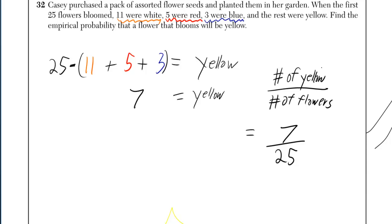So we need to find out how many yellow we have. Well, if there's 25 flowers, we need to subtract the sum of the 11 white flowers, the 5 red ones, and the 3 blue ones. So we need to subtract 19 to get 7.